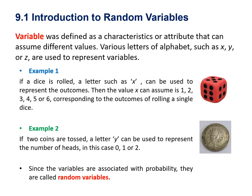Variables are defined as a characteristic or attribute that can assume different values. Various letters of the alphabet such as x, y, or z are used to represent variables. Example 1: if a dice is rolled, a letter x can be used to represent the outcomes.